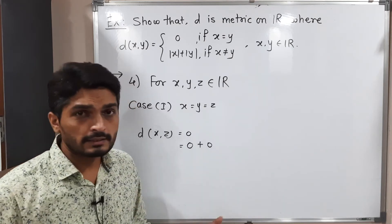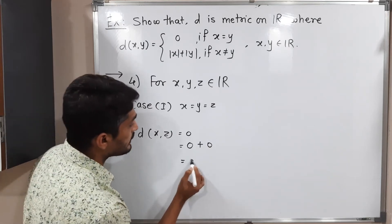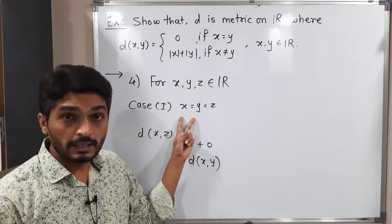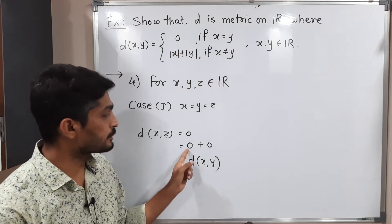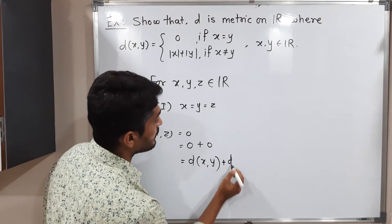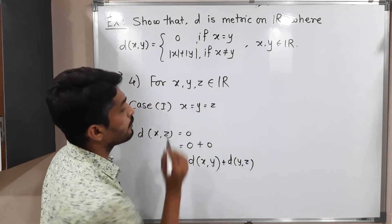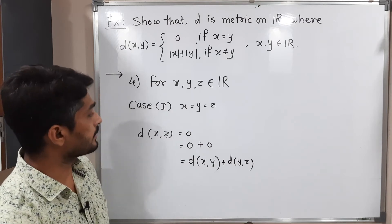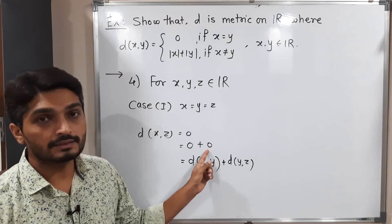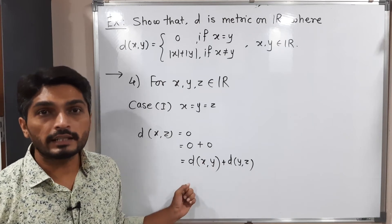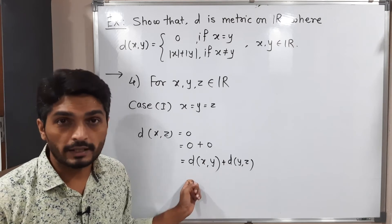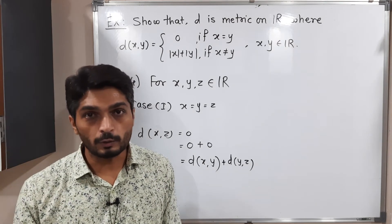Now 0 = 0 + 0. But since X = Y, D(X,Y) = 0; and since Y = Z, D(Y,Z) = 0. So D(X,Z) = D(X,Y) + D(Y,Z). We get equality here, which satisfies the condition D(X,Z) ≤ D(X,Y) + D(Y,Z). Case 1 is done.